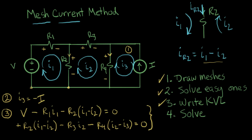We're working on the mesh current method, a method of analyzing circuits. In the previous video, we set up our circuit, we set up our mesh currents flowing around these loops within the circuit, and we solved for the easy currents. This current source constrains I3 to be a fixed value, so we already know I3. Then we created two equations from the two independent variables, the two currents, to describe how the circuit works. In this video, we're going to solve these two equations.